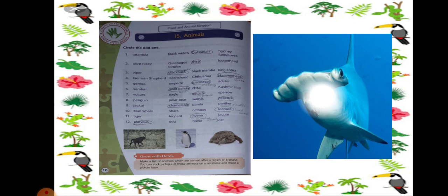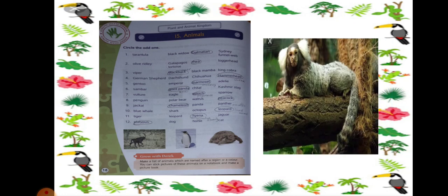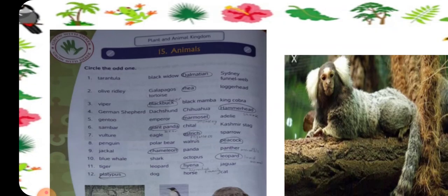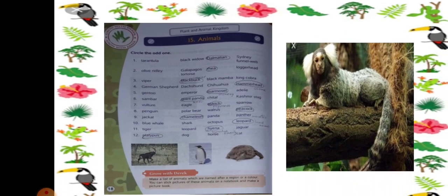Next number 5: Gentoo, Emperor, Marmoset, Adelie. So you can see out here, Marmoset is a monkey, and Gentoo, Emperor, Adelie are another breed of animal. So that is why Marmoset should be the odd one. So that should be circled.